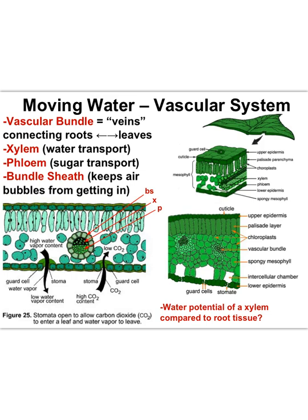The water potential of the roots is lower than the soil, but the water potential of the stem is even lower than the roots, and the water potential of the leaves is lower still. Right next to the xylem is the phloem, which has a different job: the phloem is in charge of moving sugar around.